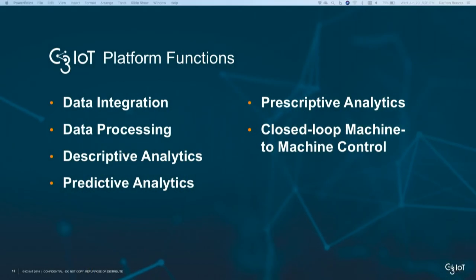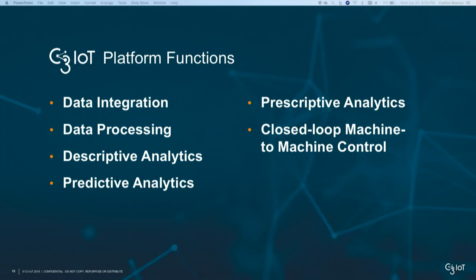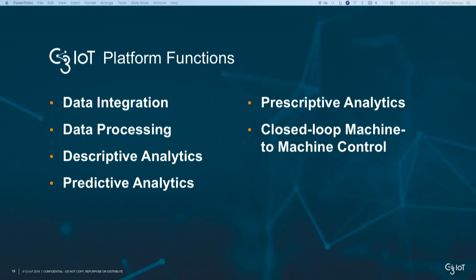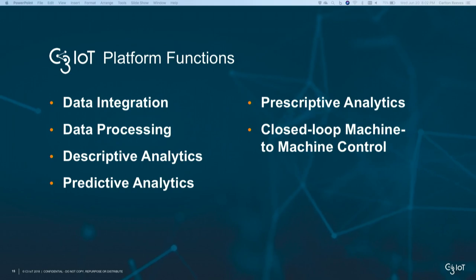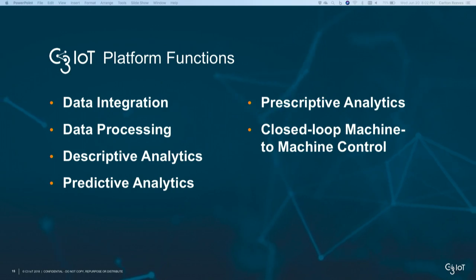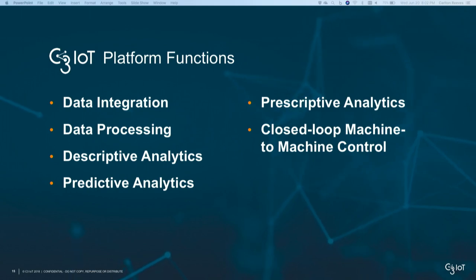What does all of that actually do? It does a couple of things. One, it's a data integration platform. Two, it's a data processing platform. And most importantly, it's an analytics platform where we drive three types of analytics: descriptive analytics — what's happened; predictive analytics — what's going to happen; and prescriptive analytics — what do I do next? If I know my asset is going to fail and I've trained an AI classifier on top of that, how do I prevent that? How do we recover and build intelligence into our business processes? This is that closed-loop machine-to-machine control.